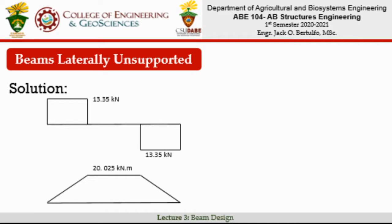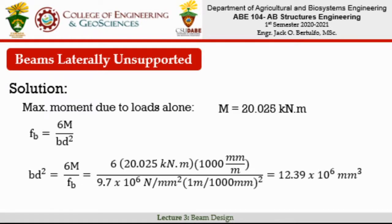Using the area method, since the shear diagram is rectangular (zero slope) between the load and support, the bending moment is calculated by multiplying 1.5 m by 13.35 kN, giving a maximum bending moment of 20.025 kN·m. This bending moment is from the applied loads alone. Remember, the problem also gives the weight of the beam, which we will account for later.